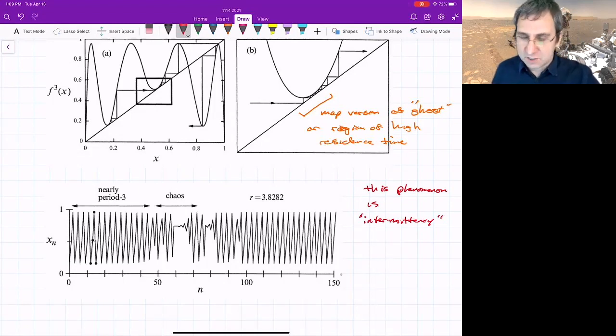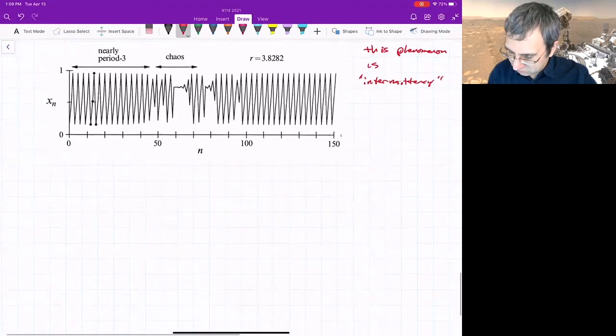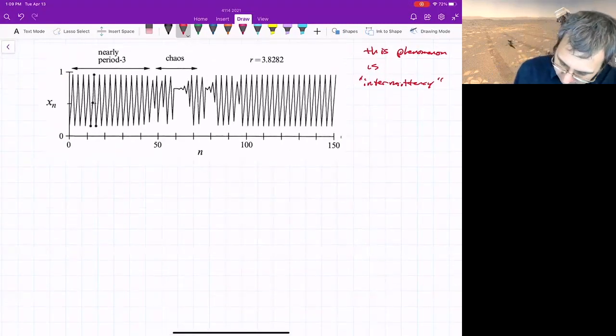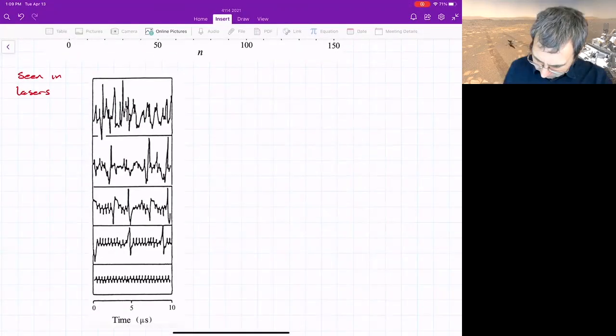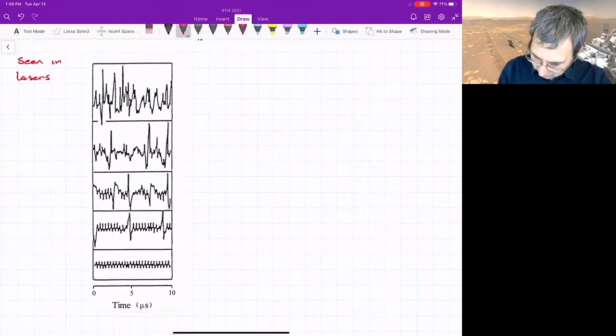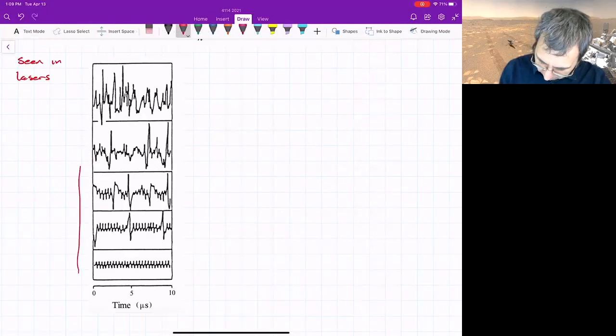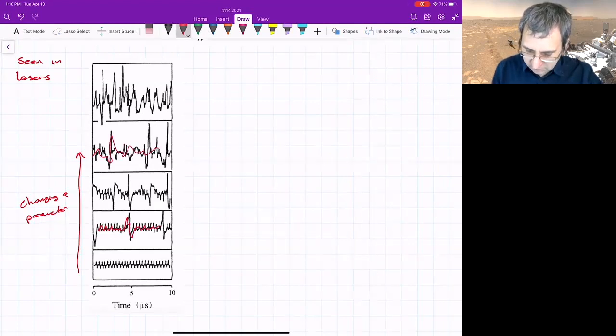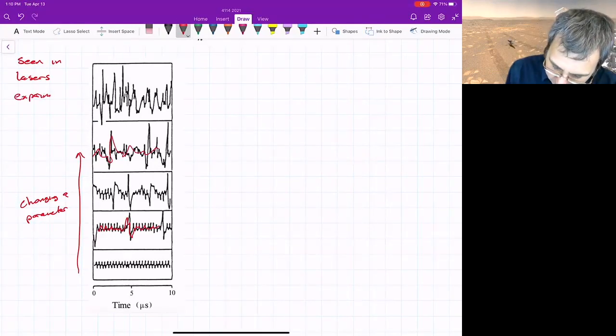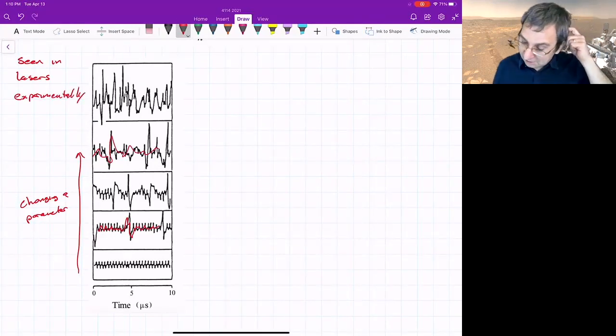This phenomenon is intermittency, and it's related to the intermittency route to chaos. It's seen not just in maps, you can see it in actual systems. It's been seen in lasers experimentally. We're changing the condition of the laser here as things go upward, showing a time series. There's times where it's stuck, then something chaotic stuck. As you increase this further, then you could have what looks like full blown chaos happening. So that's seen experimentally, it's the intermittency route to chaos.